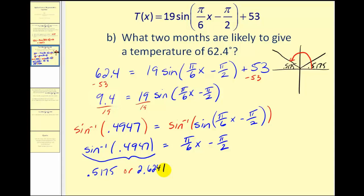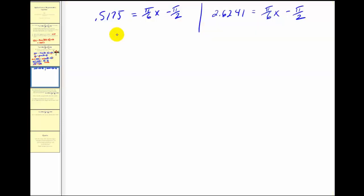So we actually have two equations that we have to solve. Let's take this information onto the next screen. We're going to set the right side equal to point five one seven five, and then we'll take the right side and set it equal to two point six two four one as well. Again, we had two different angles that had the sine function value that we were looking for. We had this and we also had this angle.